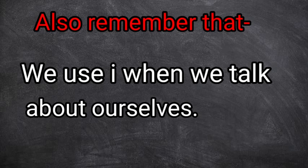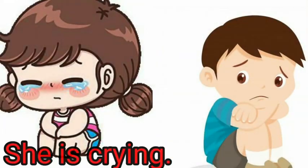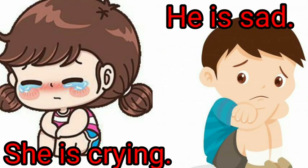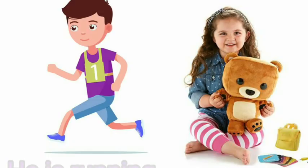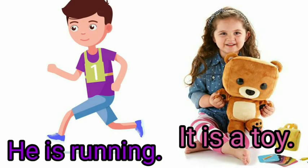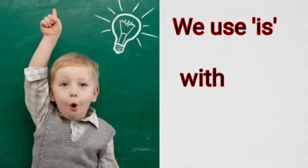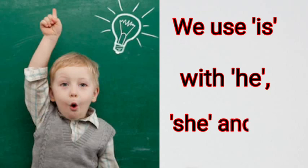She is trying. He is sad. He is running. We use 'is' with he, she, and it.